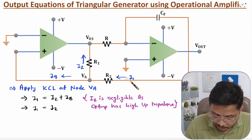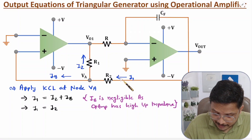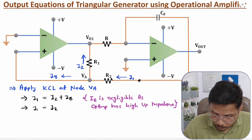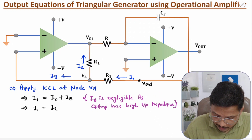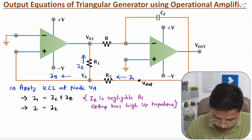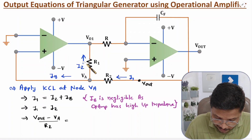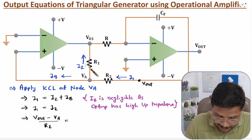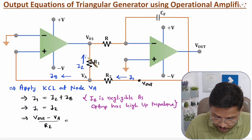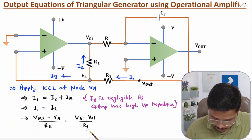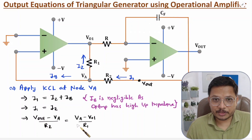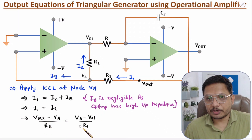Now, I1 flows between Vout and VA, so I1 = (Vout − VA) / R2. And I2 flows between VA and V01, so I2 = (VA − V01) / R1. We will use this equation to derive the frequency formula.